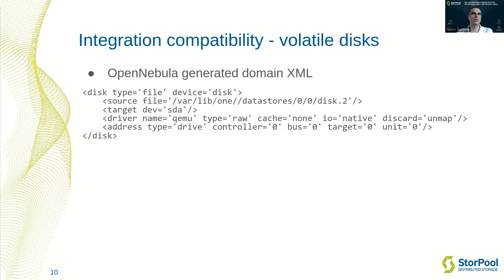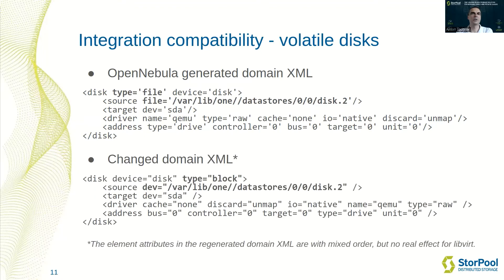As you can see in the generated OpenNebula configuration, the volatile disk is defined as a file. The helper script will check that the data store driver used for this disk is provided by StorPool, and the domain XML configuration will be changed to represent a block device instead. The resulting XML has a different order of elements and quoting because the helper scripts are written in Python and the ElementTree module rearranges them, but the resulting XML is totally valid for LibVirt.